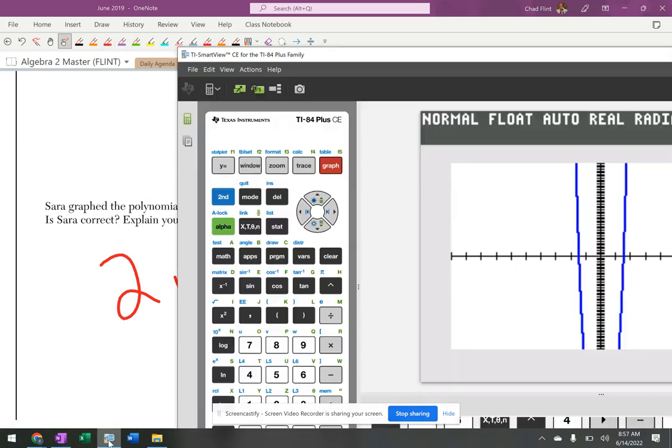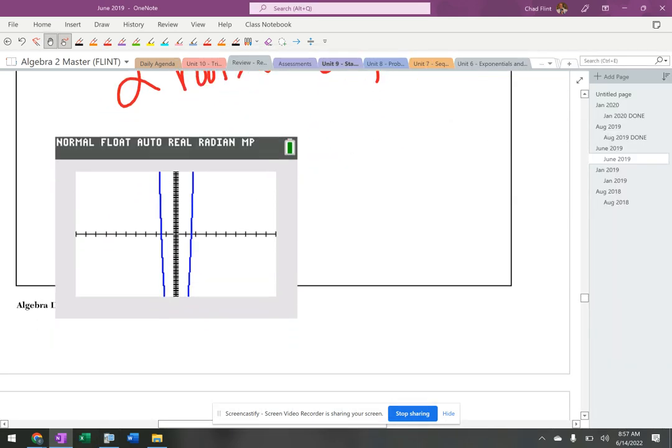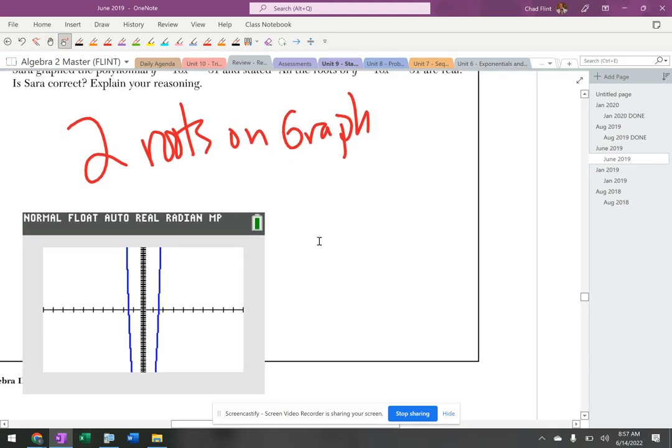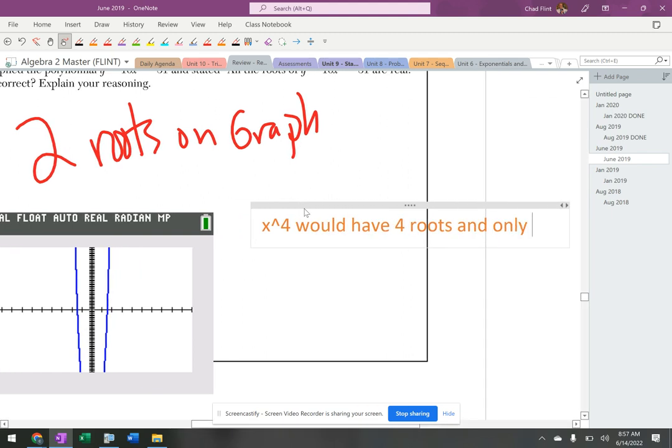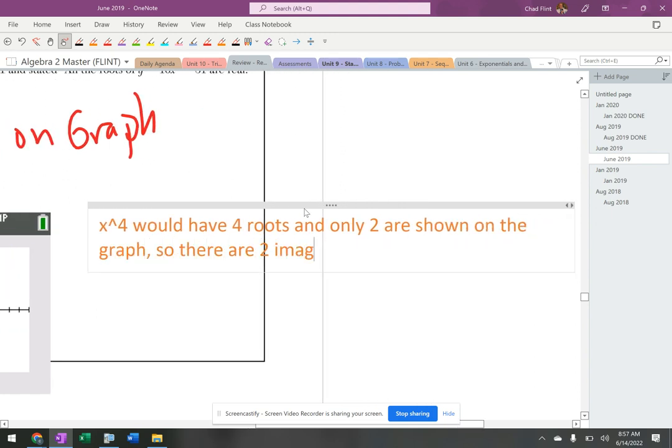Put that back up. So there's my graph. This proves that the roots are all real? x⁴ would have four roots and only two are shown on the graph, so there are two imaginary.